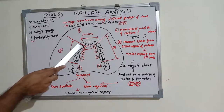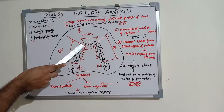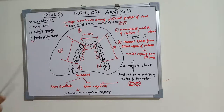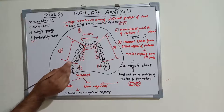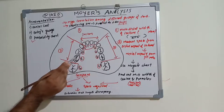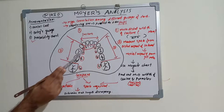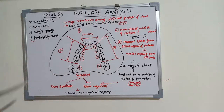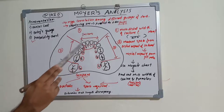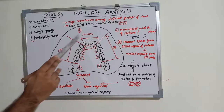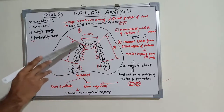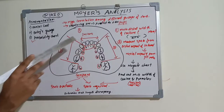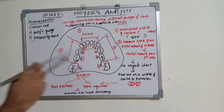The second step is to measure the distance — that is, the space — from the distal surface of the lateral incisor to the mesial side of the permanent first molar. So the arch includes: permanent central incisor, permanent lateral incisor, deciduous canine, deciduous first molar, deciduous second molar, and permanent first molar.